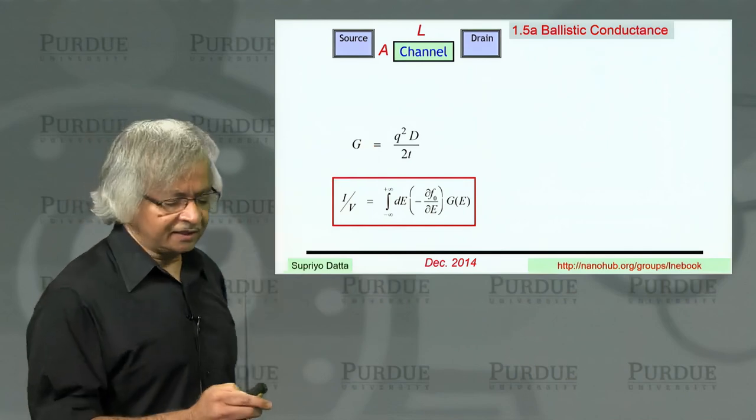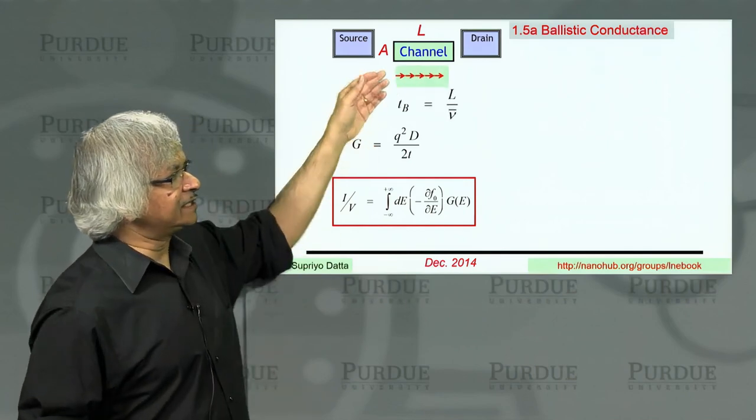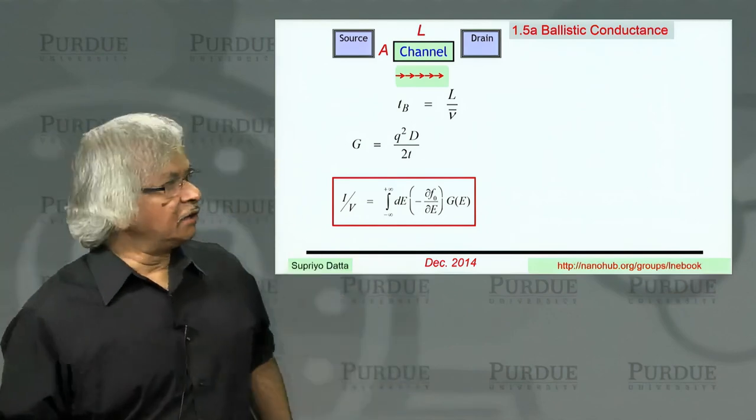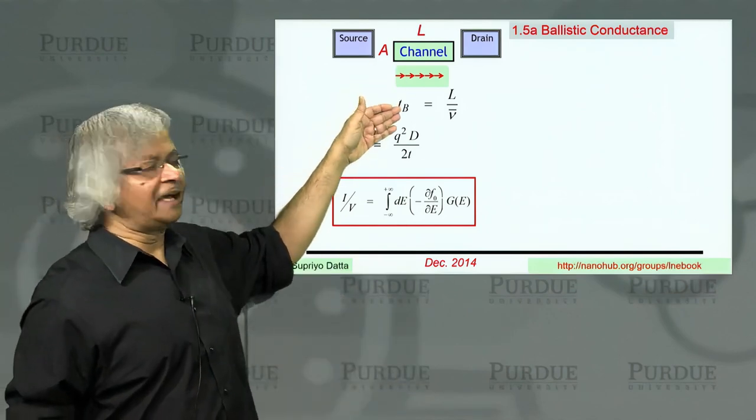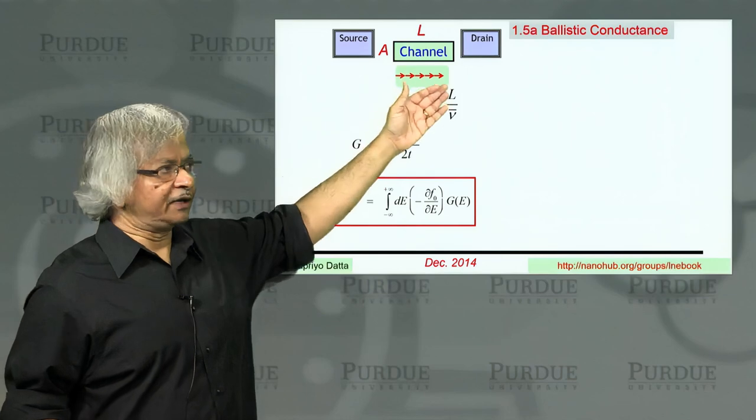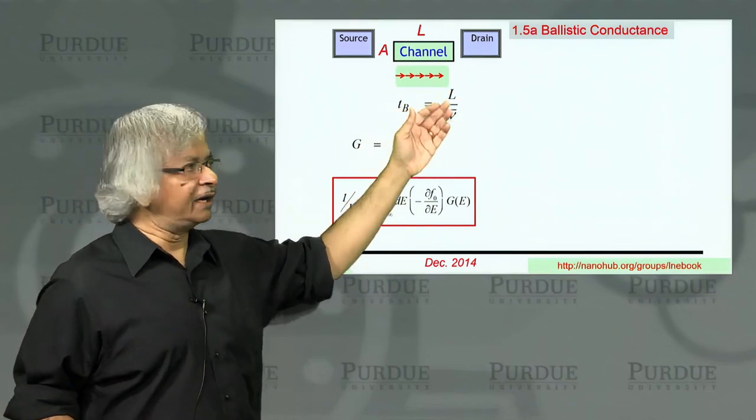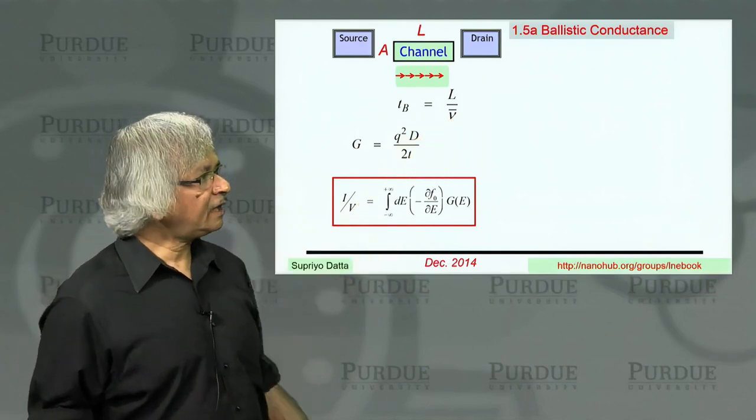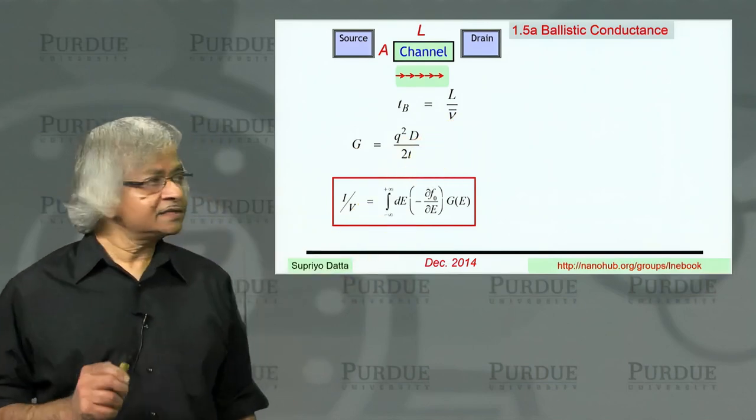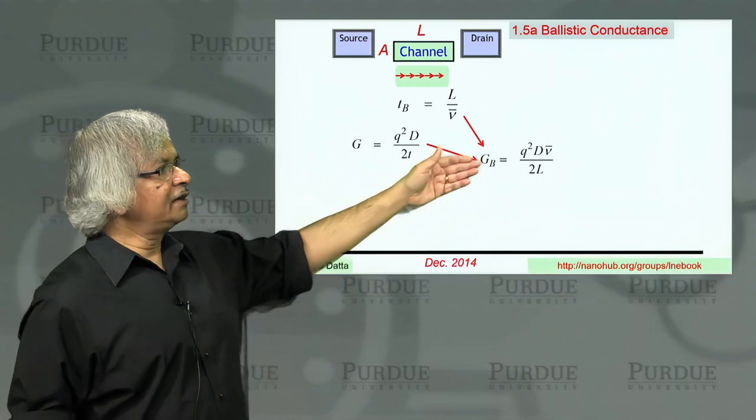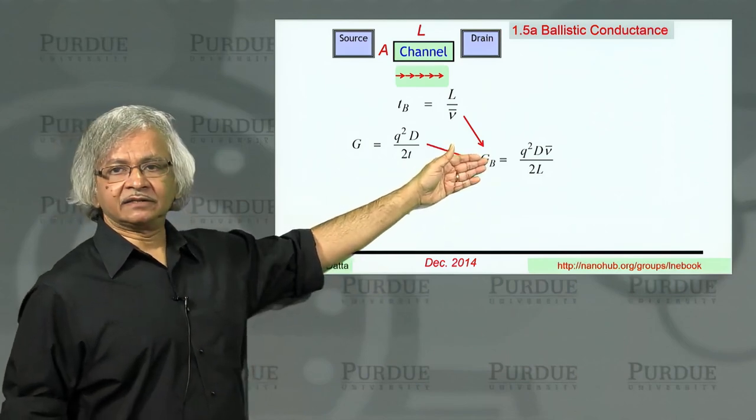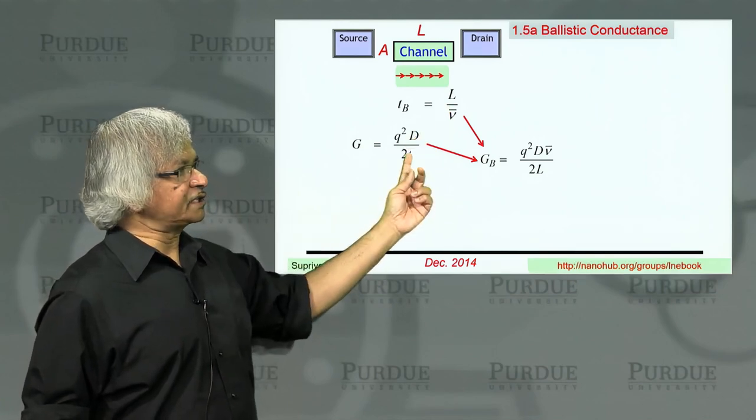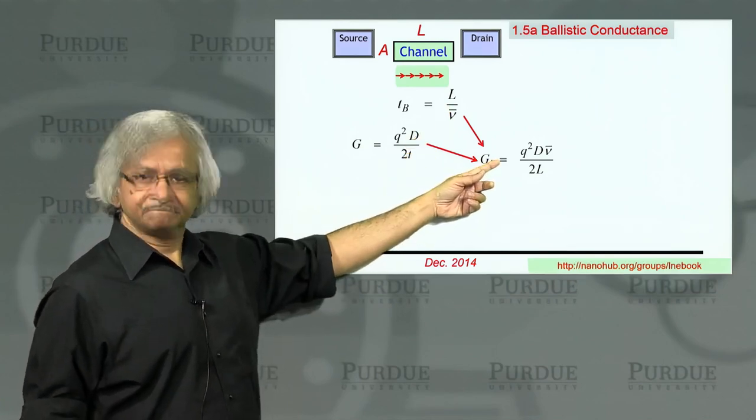So what about the ballistic conductance? Well, ballistic means that electrons go through the channel like a bullet. And so it's straightforward to write down the time it will take to get from left to right. It's just the length of the channel divided by the average velocity. So if you combine those two things, you get an expression for the ballistic conductance. I just put this time from here into this expression, and that's what you'll get.